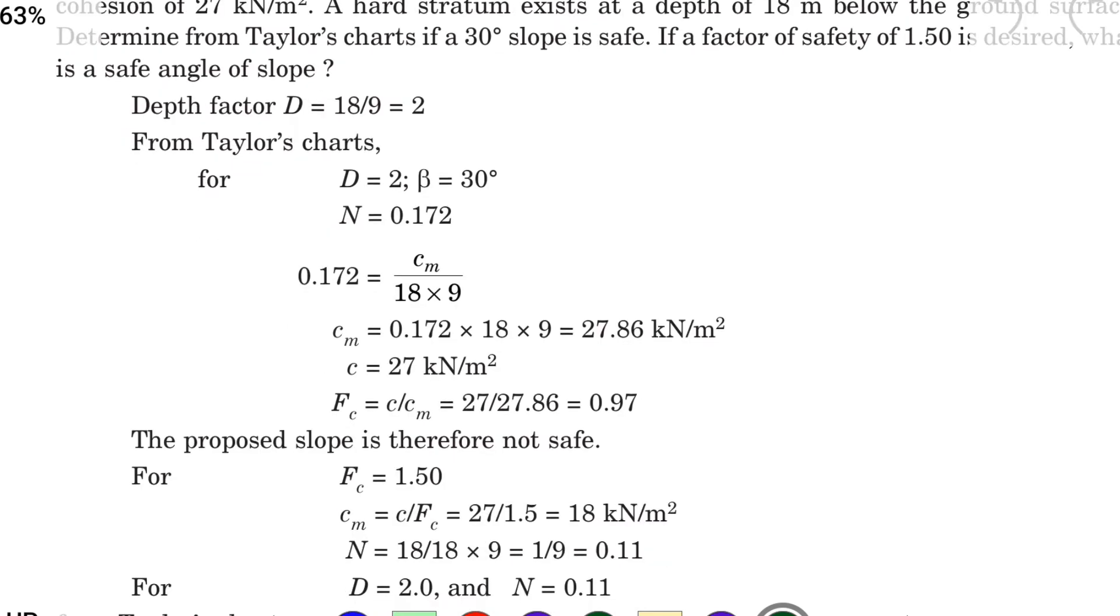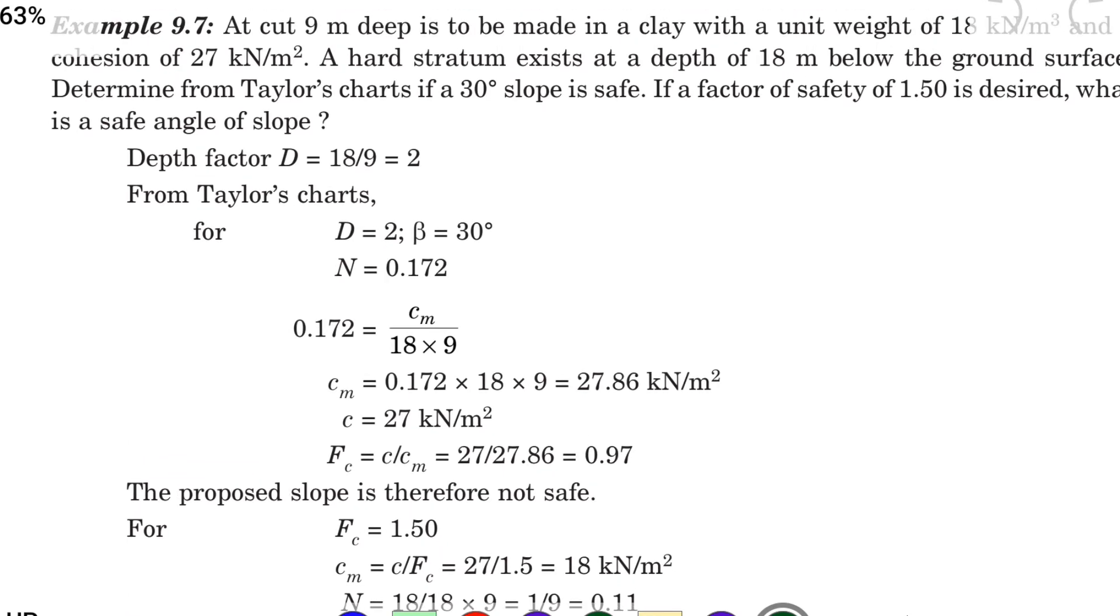So now we know the formula N equal to CM divided by gamma into H. So now CM equal to N value 0.172 and gamma value 18 that is also given 18 kN per meter cube, and H value is 9, so the 9 meter deep.